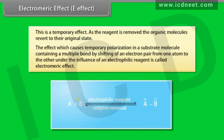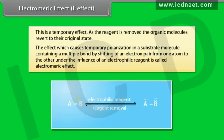The effect which causes temporary polarization in a substrate molecule containing a multiple bond by shifting of an electron pair from one atom to the other, under the influence of an electrophilic reagent, is called the electromeric effect.